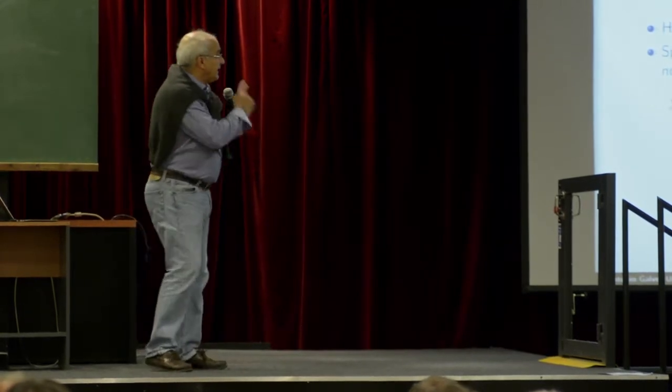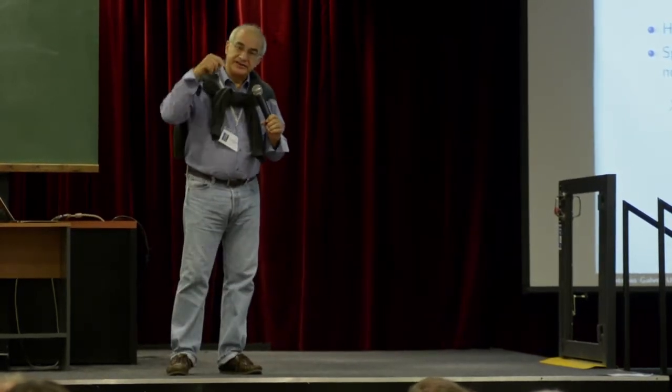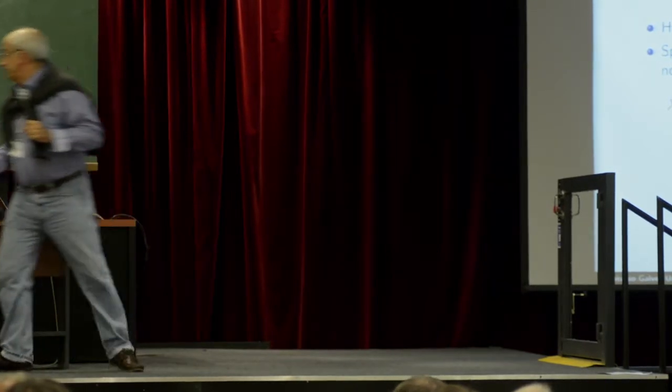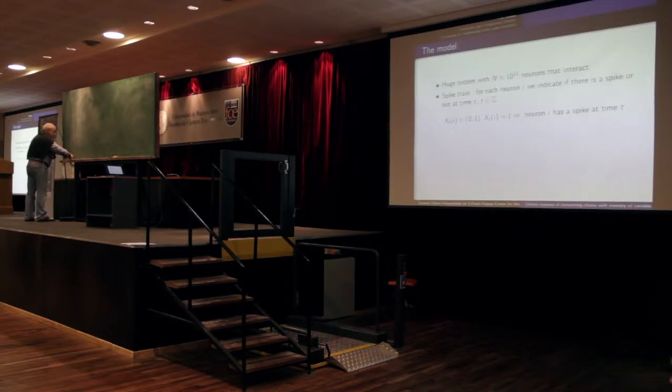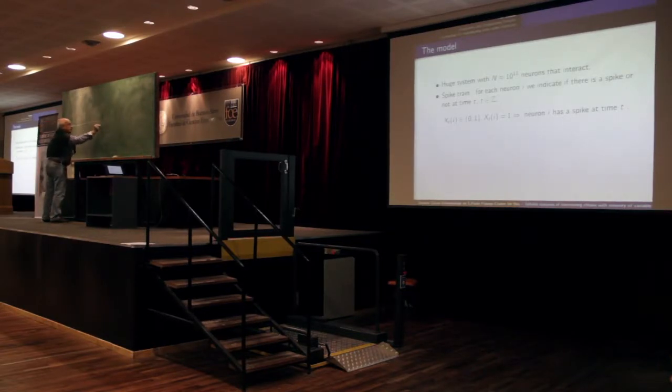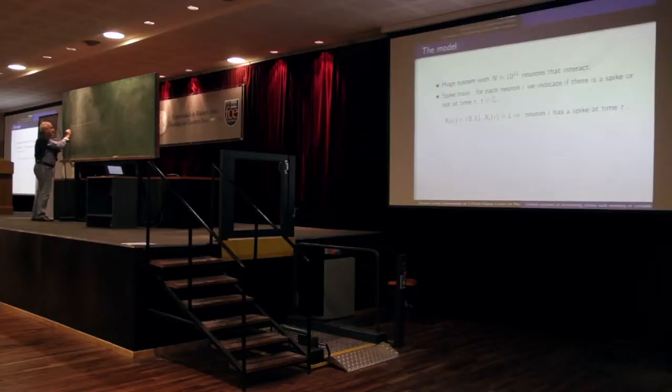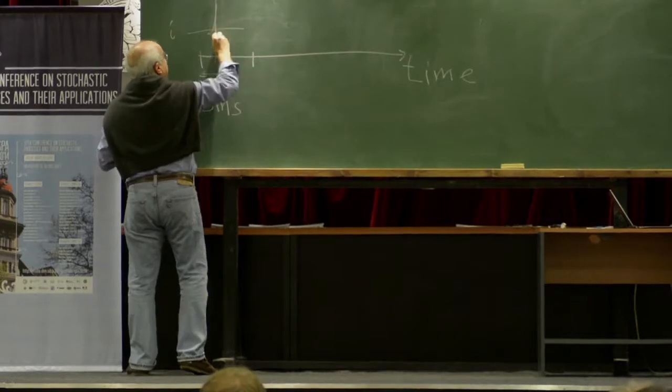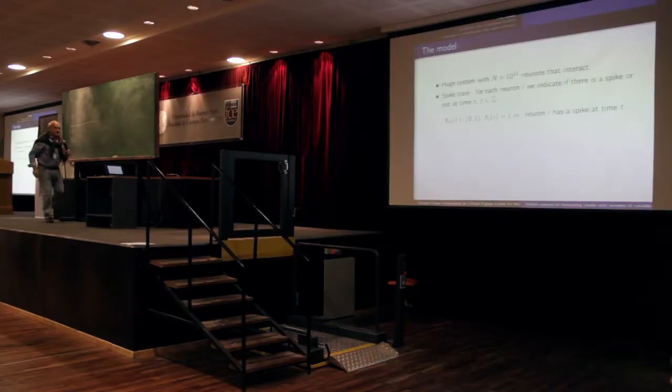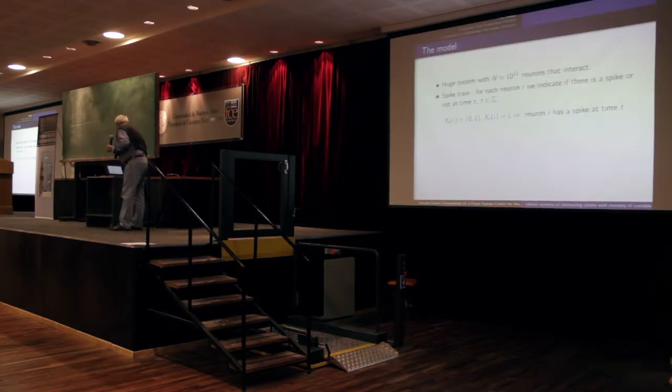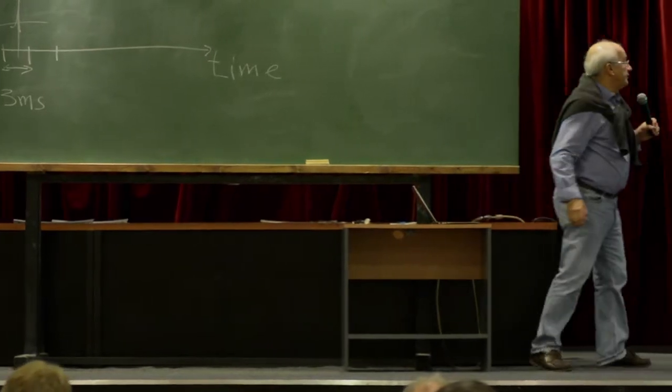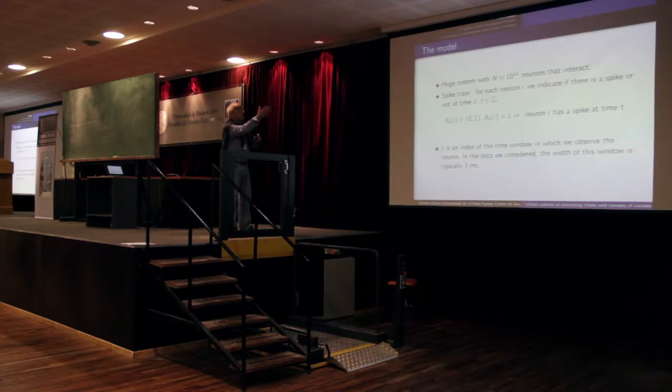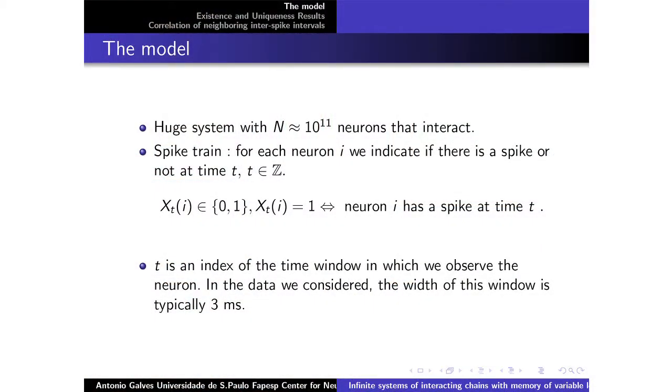So, a spike train. For each neuron i, we indicate if there is a spike in this neuron at a certain time. Time, actually, is a time window. You have windows which are, say, three milliseconds, and you say if neuron i has a spike, yes or no. So you have a process which takes value in the set 0,1 to the power i. For experimental data, usually I take windows of three milliseconds.